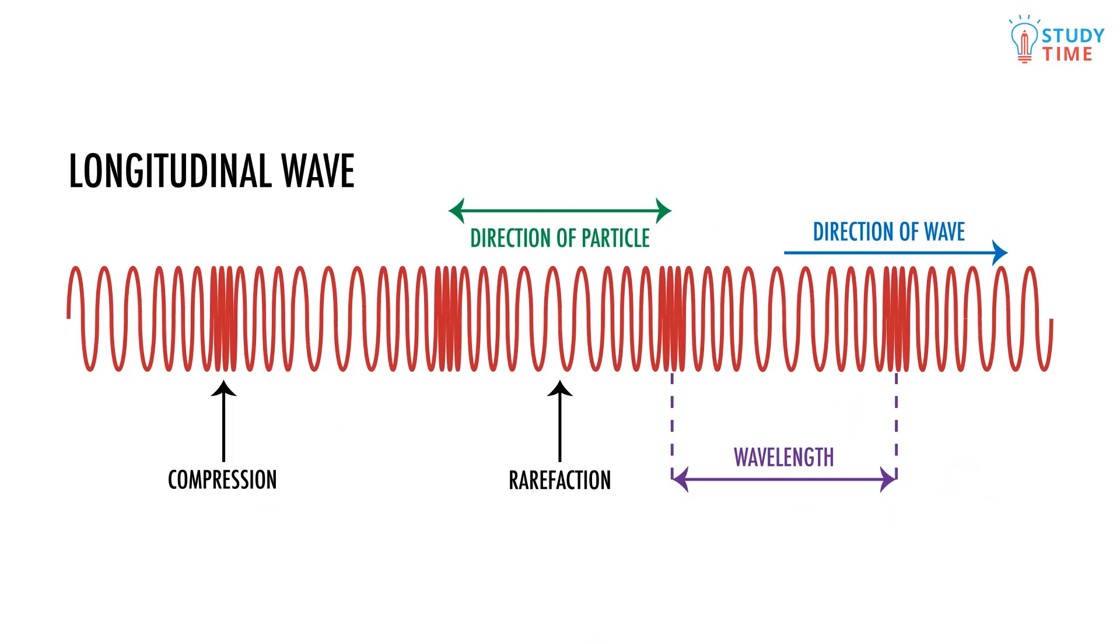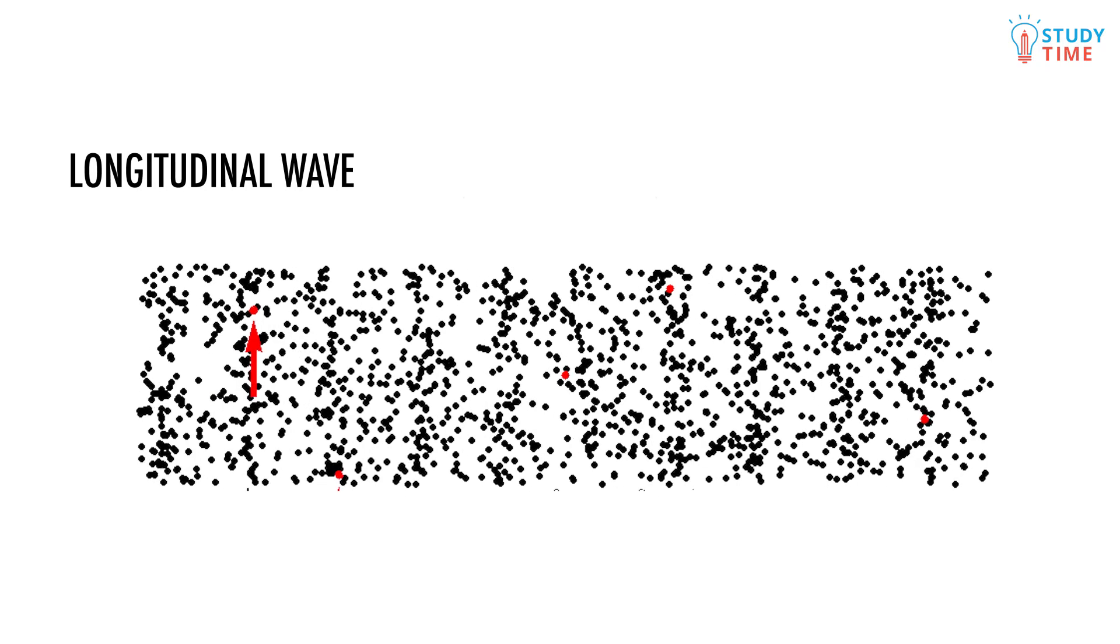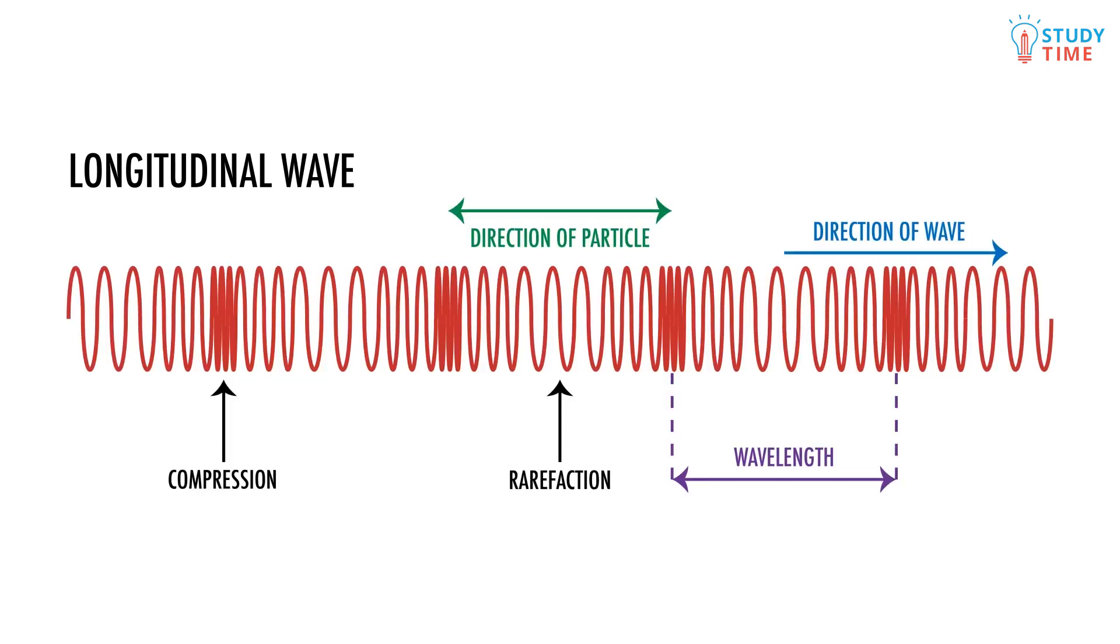Now let's look at a longitudinal wave. In these waves, the particles and the energy both move horizontally. Longitudinal waves are like what you get when you stretch back a slinky. Where the slinky bunches together we have a point of compression, and where it stretches we have rarefaction. Basically, longitudinal waves like looking down at transverse waves from above.